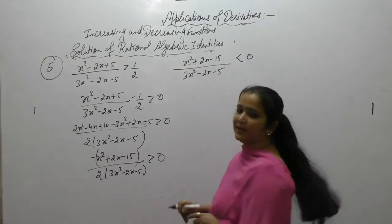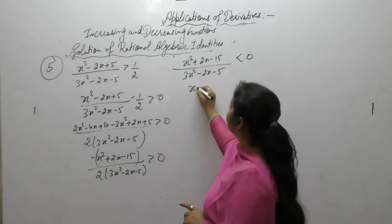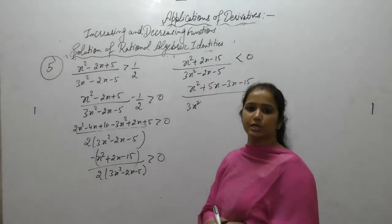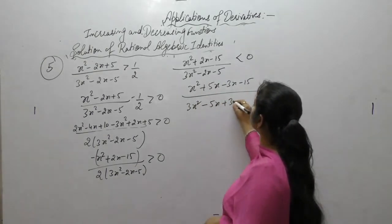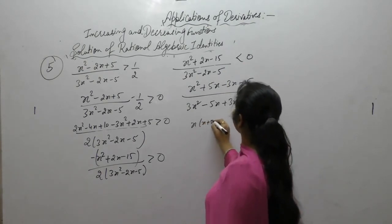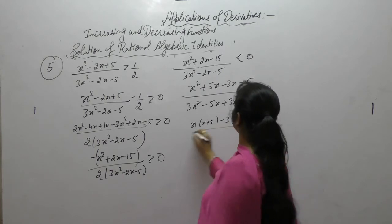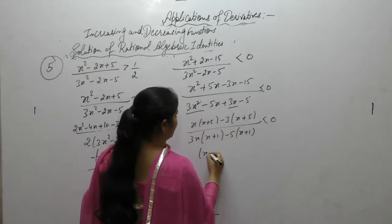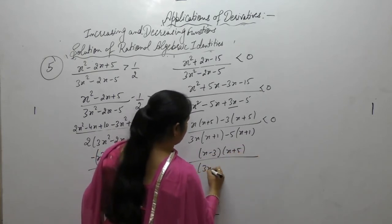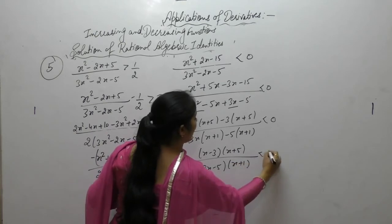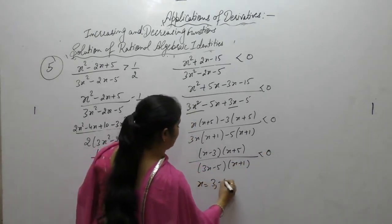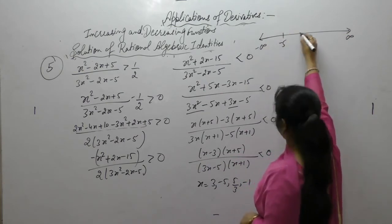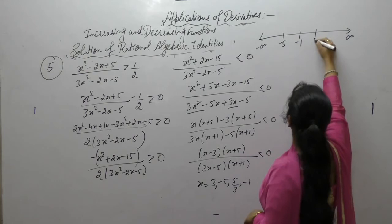Factorizing numerator x² + 2x − 15: on multiplication minus 15, on adding 2; so 5 minus 3. Denominator 3x² − 2x − 5: on multiplication minus 15, on adding minus 2; so 5 minus 3 gives (3x − 5)(x + 1). Factors overall: (x minus 3)(x plus 5) over (3x minus 5)(x plus 1) less than 0. Setting equal to 0: x is 3, minus 5, 5/3 ≈ 1.6, minus 1.